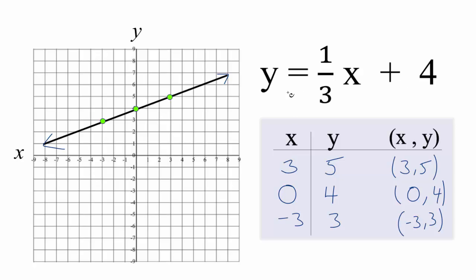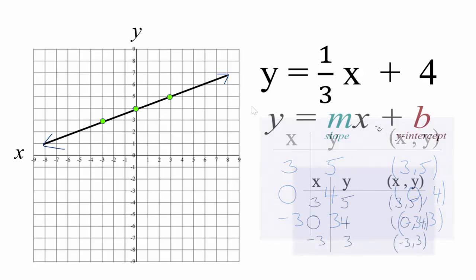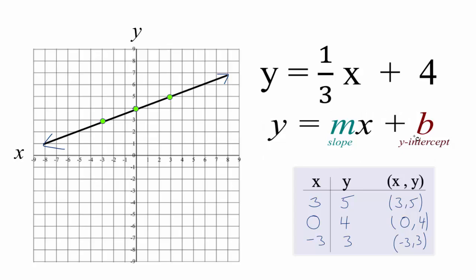Let's check our work with slope-intercept formula. So b is the y-intercept. That's four. So we can plot a point on the y-axis at four. That's where the line should cross. And it does. So that's good.